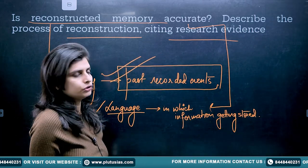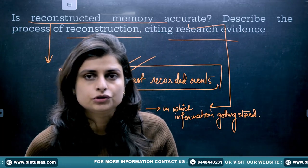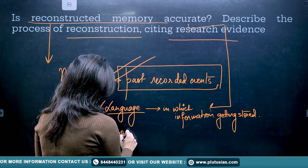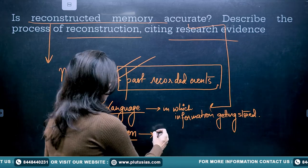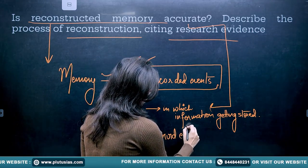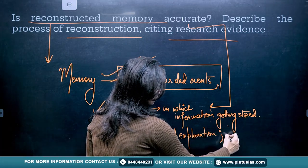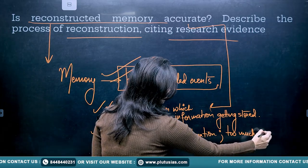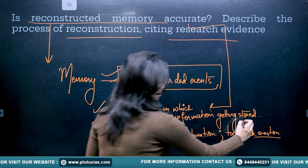The next thing to talk about is emotions — emotions also tend to distort the memory. Sometimes emotions help you in having a vivid explanation, but at times too much emotion can also distort the memory.